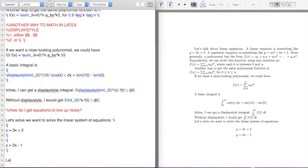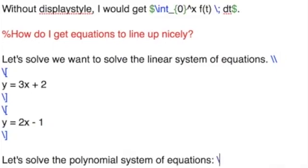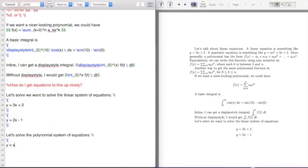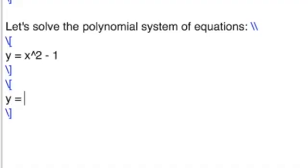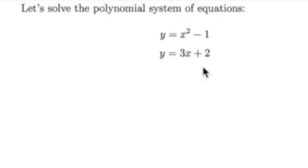Now let's say we want to talk about another system of equations, but instead of a linear system of equations, now we have a linear and a quadratic. So I'm going to say y equals x squared minus 1, y equals 3x plus 2. So I'm going to typeset that, and they line up great.